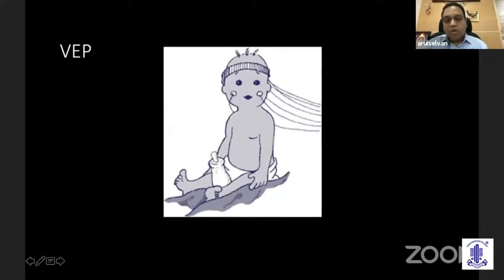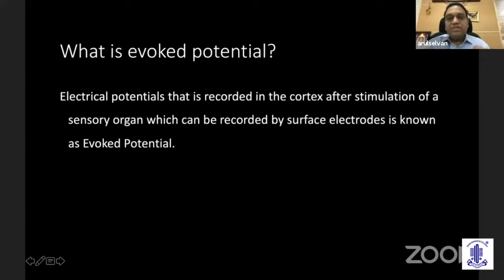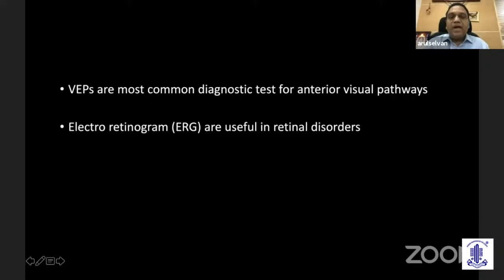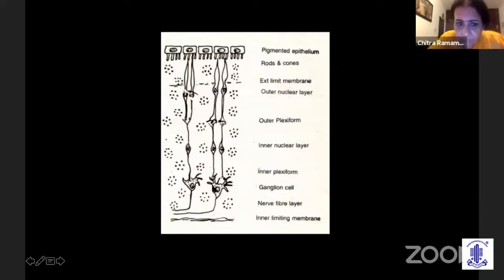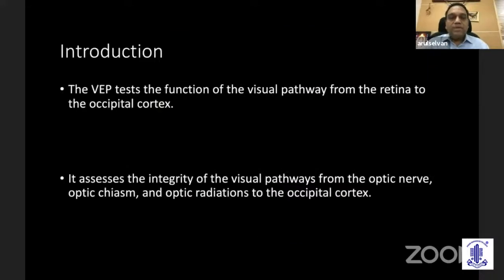Visual evoked potentials are the volume of impulses generated from the retinal nerve fiber layer, carried through the optic nerve, optic chiasm, and optic tract, then entering the optic radiation. It is a summation of action potentials. These impulses are generated from this layer and recorded at the occipital cortex, similar to other evoked potentials like somatosensory evoked potentials from the median nerve and brainstem auditory evoked potentials from the vestibulocochlear apparatus. The VEP tests the function of the visual pathway from the retina to the occipital cortex.